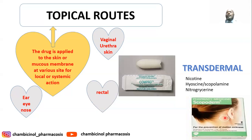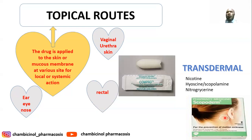The drug slowly releases from the patch, beneficial especially when traveling — you can apply it one hour before starting the journey, and it releases for one to three days. This is beneficial for prolonging the duration of drug action. Nitroglycerin used as an anti-angina is also applied at the chest with transdermal patches, slowly releasing as prophylaxis for angina.